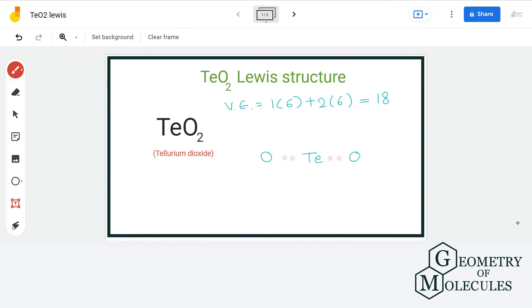Now each oxygen atom needs six more electrons for complete octet, and we are left with two more electrons that we will assign to tellurium. But in this structure tellurium has an incomplete octet, and so we will transfer two electrons from oxygen to in between tellurium and oxygen. Now each atom has complete outer shell in this structure.